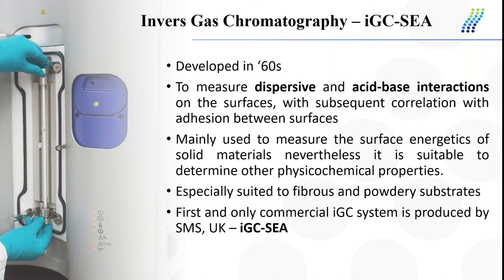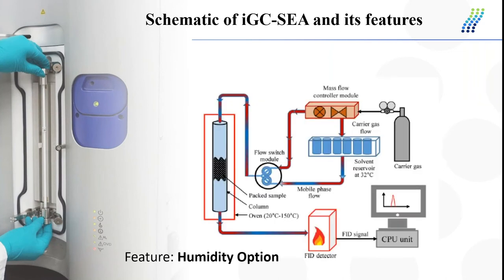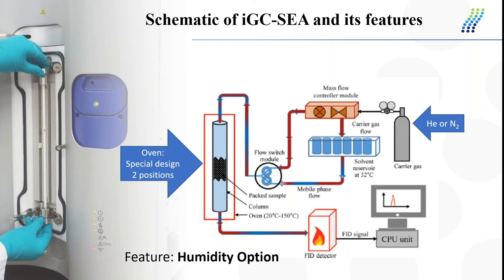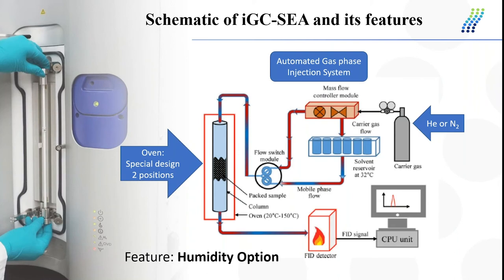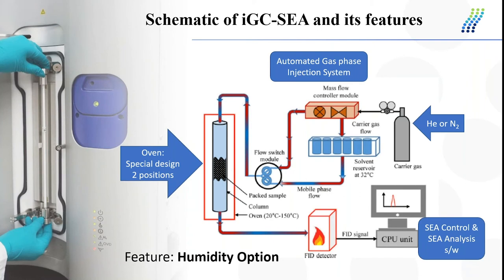IGC-SEA is the first and only commercial IGC system, produced by SMS. The carrier gas is helium or nitrogen. The oven has a special design to determine thermodynamic properties, and there are two column positions. The standard oven has a 20 to 150 degrees C operating range. It has an automated gas phase injection system which provides precise injection of a wide range of injectable probes, and also a very user-friendly control and analysis software.